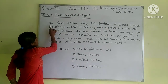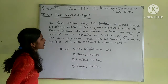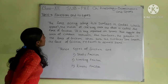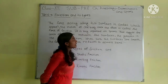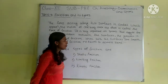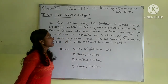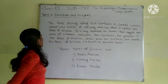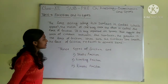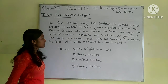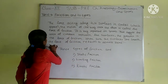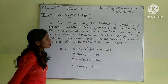In friction, the force acting along two surfaces in contact, or the motion of one body over the other, is called the force of friction. It is very important. That lagging the area of contact between the surfaces is the vector of the force of friction. When both the surfaces are smooth, the force of friction reduces to almost zero.